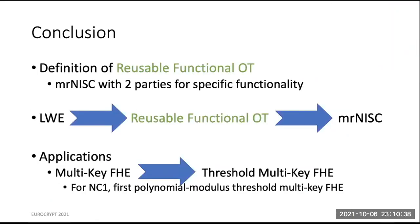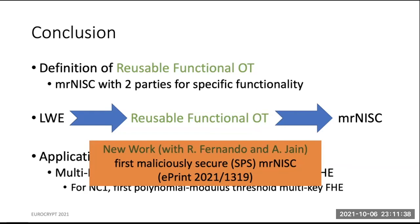In conclusion, we identified a complete primitive for MR-NISC called reusable functional OT, somewhat analogous to OT in standard secure computation. We also constructed reusable functional OT from LWE, with applications to threshold multi-key FHE. One clear open problem is to build reusable functional OT from something like DDH — this is still open. Finally, I wanted to mention a new work on ePrint constructing the first maliciously secure MR-NISC, joint work with Rex Fernando and Ayush Jain. Thank you very much for listening.